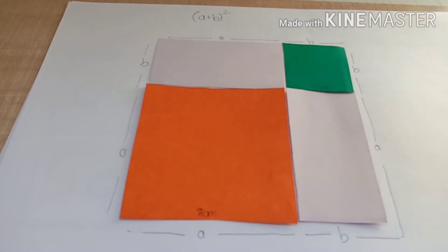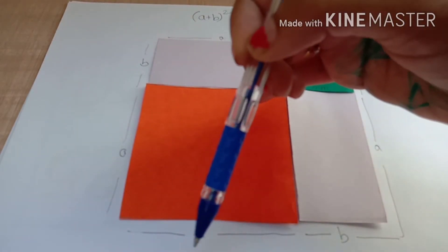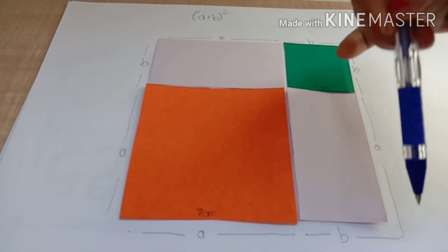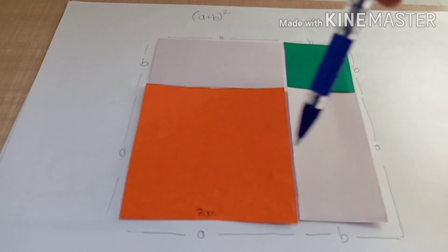Since it is a square, the area of a square will be side times side, or side squared. So since the side here is a plus b, the area of this complete square is (a+b) whole square.